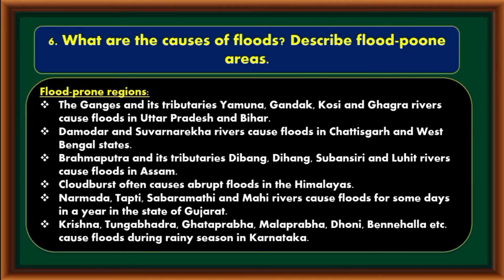Flood prone regions: The Ganges and its tributaries — Yamuna, Ghanda, Kosi, and Ghagra rivers cause floods in Uttar Pradesh and Bihar. Damodhar and Suvarnarika rivers cause floods in Chhattisgarh and West Bengal. Brahmaputra and its tributaries — Dibhang, Dihang, Subhansiri, and Luhith rivers cause floods in Assam. Cloudburst often causes abrupt floods in the Himalayas. Narmada, Tapti, Sabarmati, and Mahi rivers cause floods for some days in a year in Gujarat. Krishna, Tungabhadra, Ghataprabha, Malaprabha, Dhoni, Bannihalla, etc. cause floods during the rainy season in Karnataka.